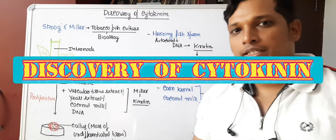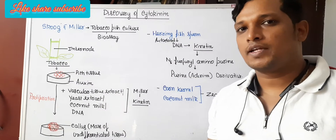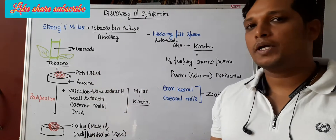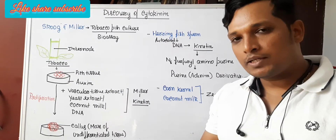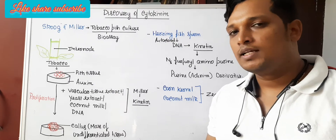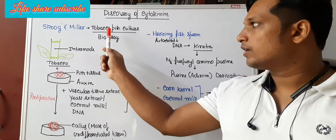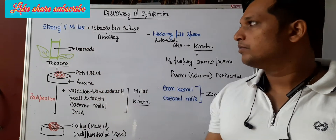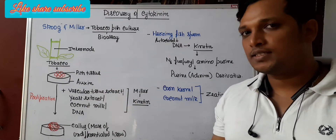Hello everyone, welcome to my channel. Today's topic is how the discovery of cytokinin took place. To understand that, we must know what a bioassay is. A bioassay is a particular test done to check the role of a particular chemical. The bioassay for cytokinin is known as the tobacco pith culture bioassay.